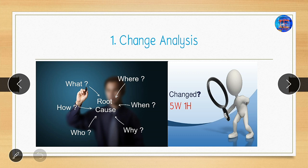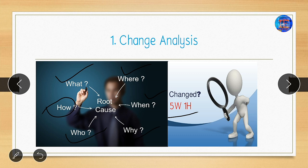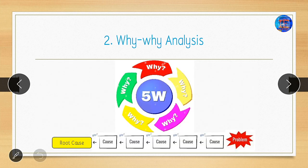In change analysis, we use 5W and 1H. We compare the situation before the problem and during the period when the problem happened to identify what change occurred. By doing this analysis, we can find a probable cause of any problem. This helps us easily find out the root cause.